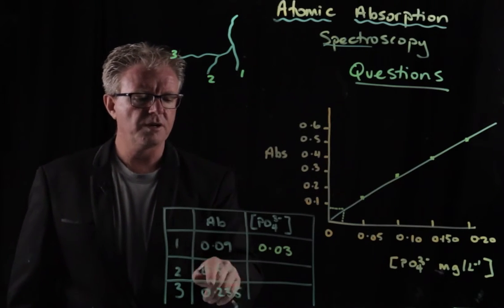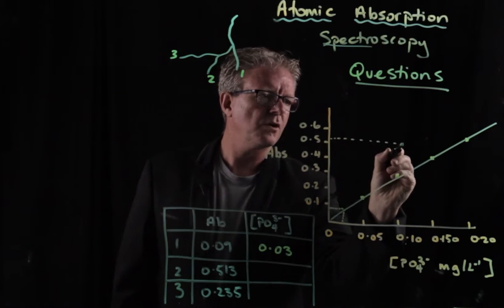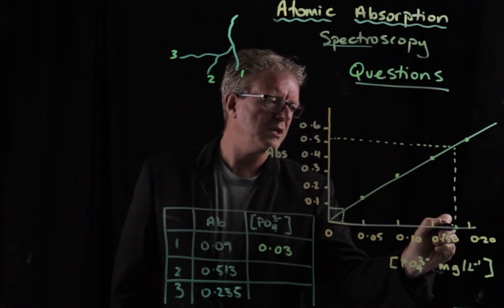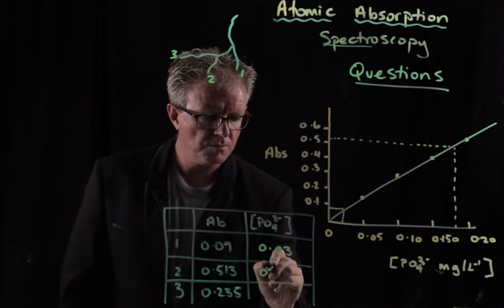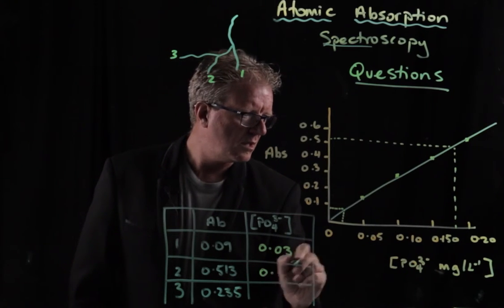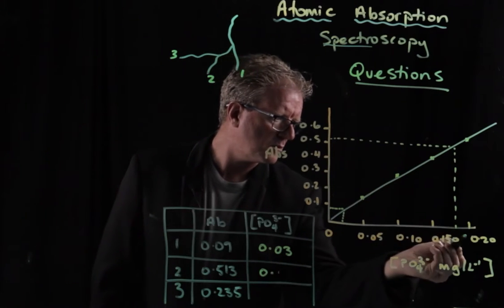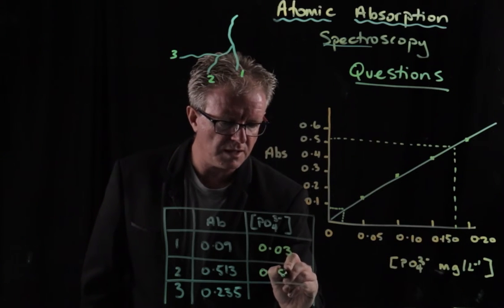Then if you go 0.513, using a ruler, of course, that's probably close to maybe 0.8. So 0.15, so it's going to be 1.8. No, sorry, it's going to be closer to 0.2, so 0.80.